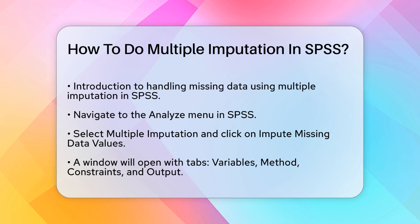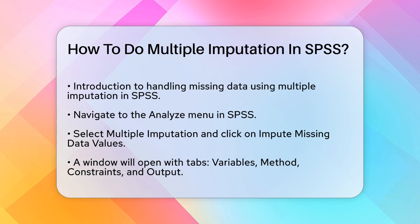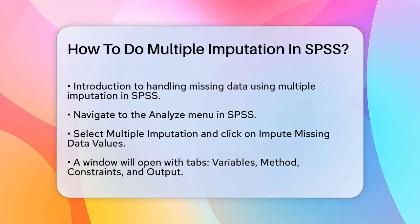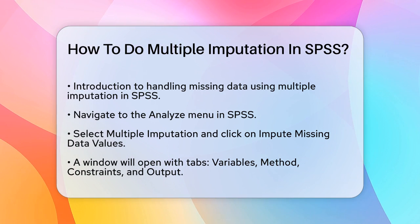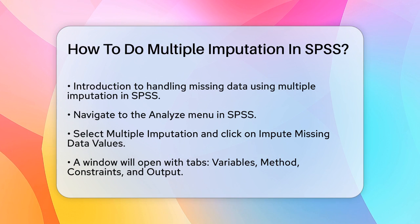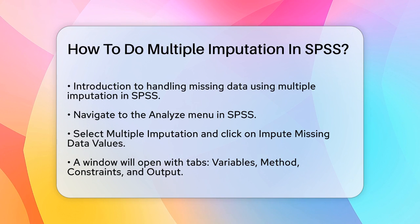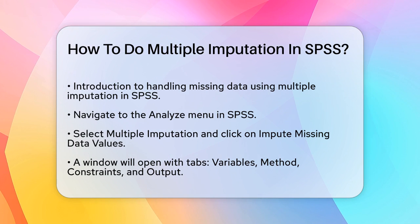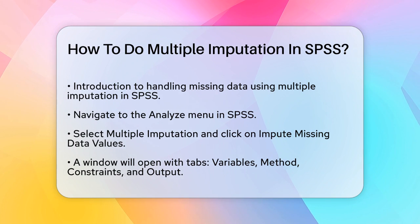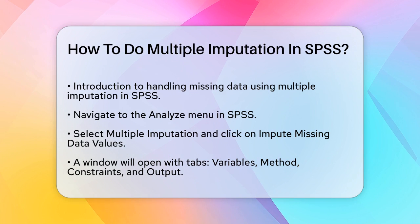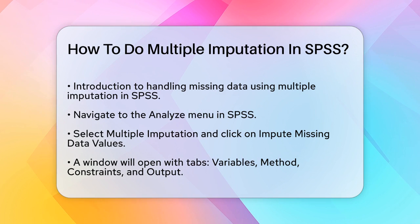First, you need to navigate to the Analyze menu in SPSS. Here, select Multiple Imputation and then click on Impute Missing Data Values. This will open a window with several tabs: Variables, Method, Constraints, and Output.